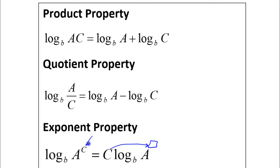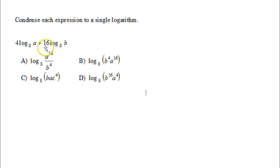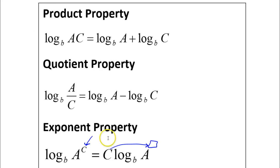That's what's happening right here. So if you have a number in front, you can put it as the exponent. That's the exponent property. So I'm going to do that for both of these terms. If I take this four and make it an exponent, and I take this 16 and I make it an exponent, then what I have is log base eight of a to the fourth power plus log base eight of b to the sixteenth power. So there I've used the exponent property.